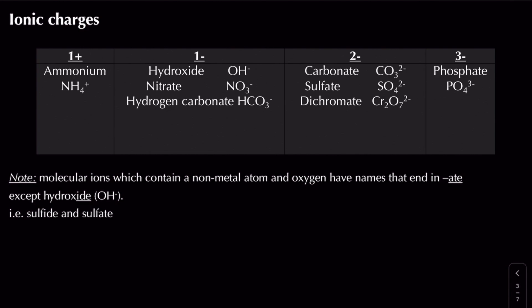Now for the more complicated molecular ions. Here I've got every single molecular ion you need to remember - both name and formula - in A-level chemistry for OCR. Starting with our 1+ ion: we have the ammonium ion, which comes from the compound ammonia, NH3. Normally ammonia gains an H+ to form NH4+ ions. This normally appears at the start of your compound names, while everything else comes at the end.